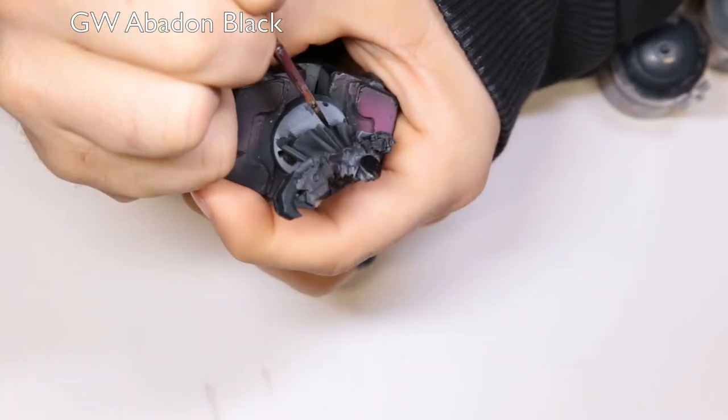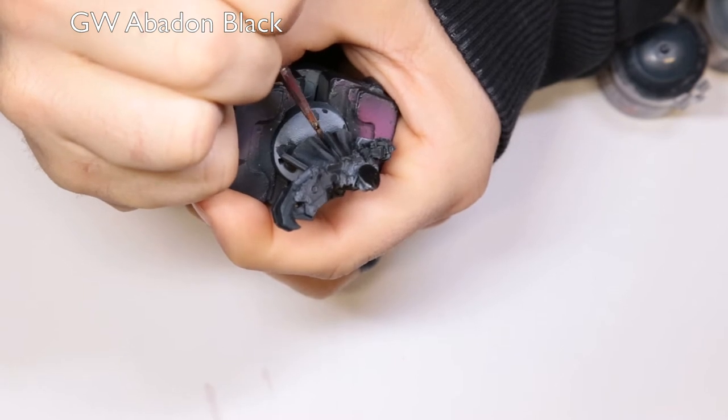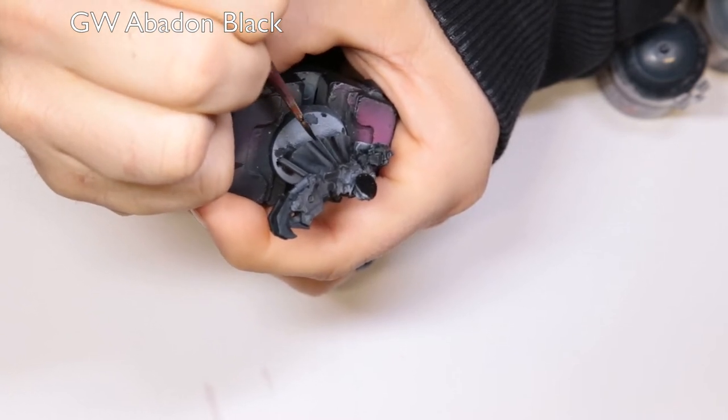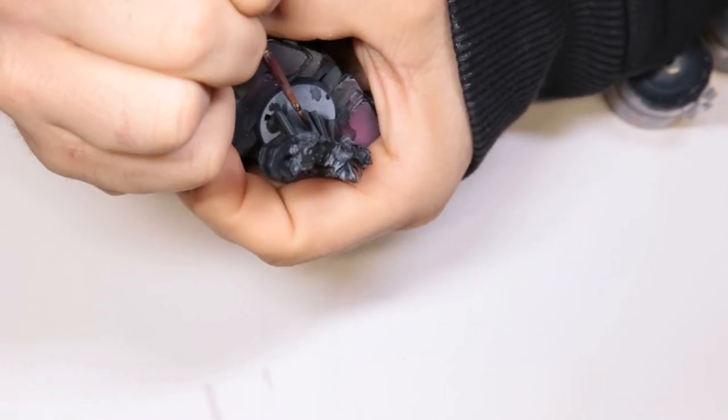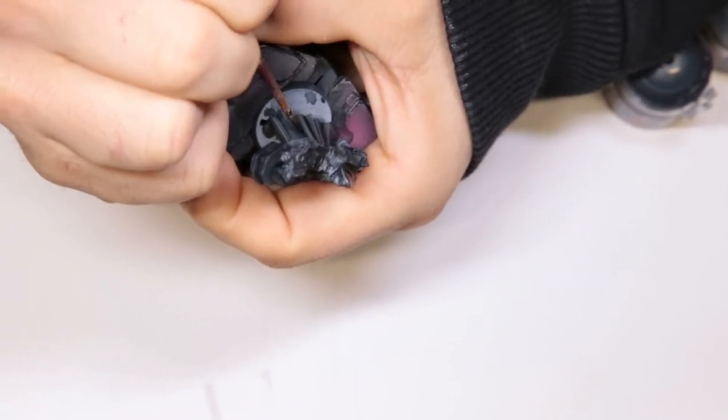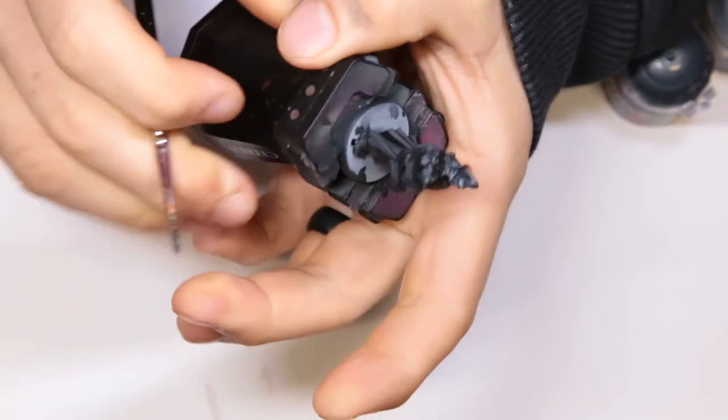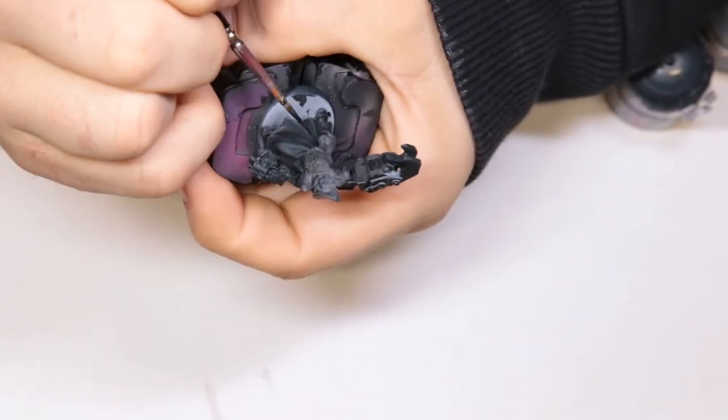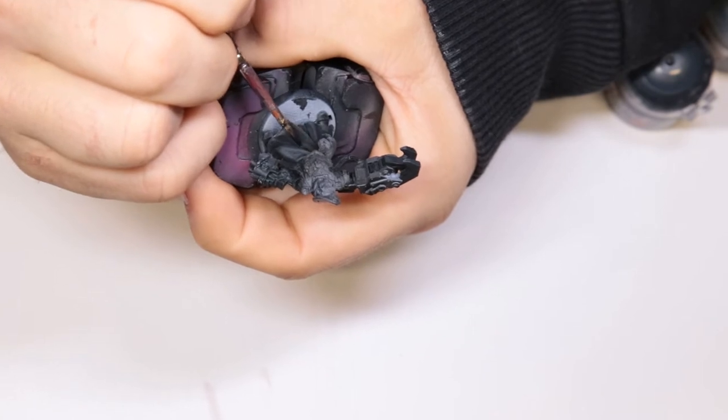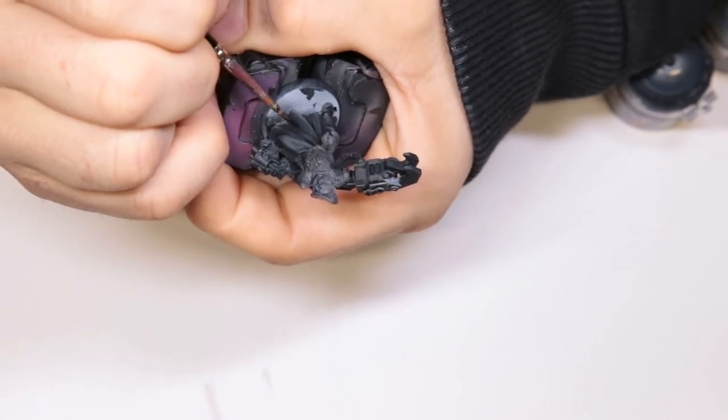Now to reinforce the shadows a little bit more, we've got this thinned down pretty significantly, not quite to a wash but almost. We're just focusing on the recesses of the cloak, any dark areas where the light is going to be stopped by a fold in the fabric. It's so easy with black to turn it to gray, so reinforcing this really helps.